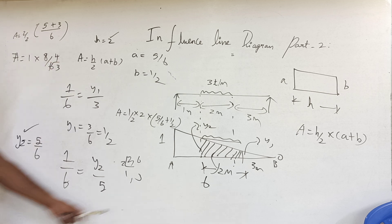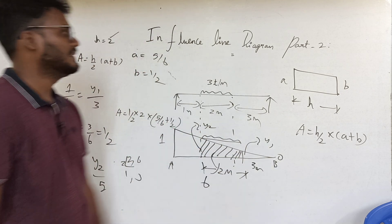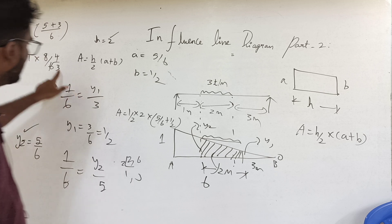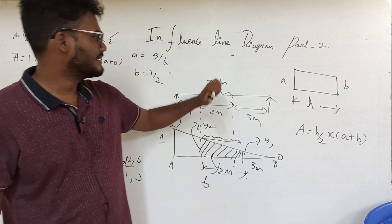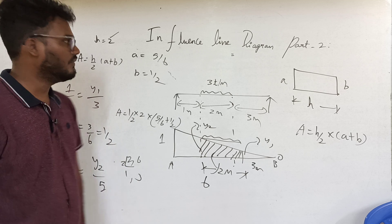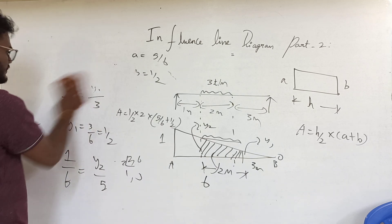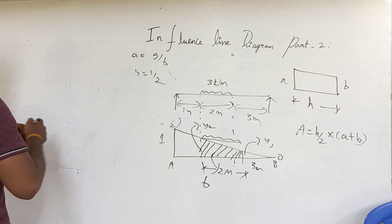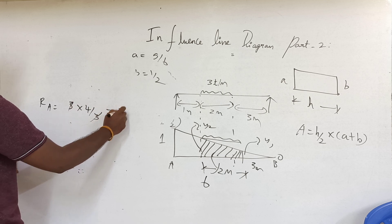The area of the ILD is 4 by 3. The UDL covers the full zone, so the area is 4 by 3. The next step is to multiply the area by the given intensity of load to get the value of RA. So RA equals intensity of UDL, which is 3, into 4 by 3. Therefore RA equals 4 tonnes.